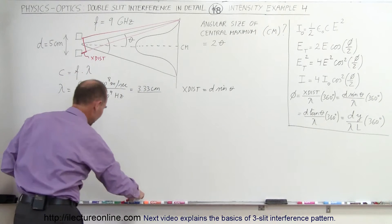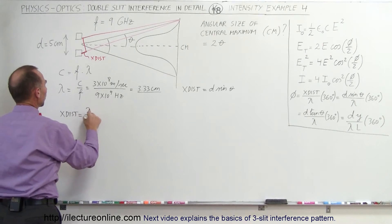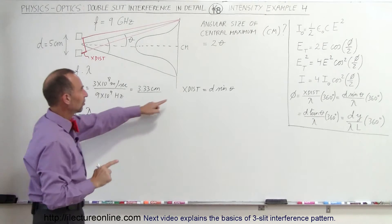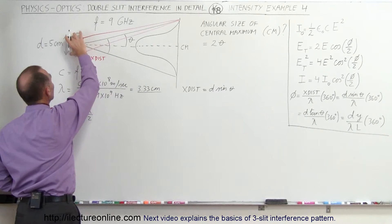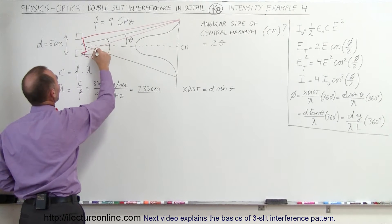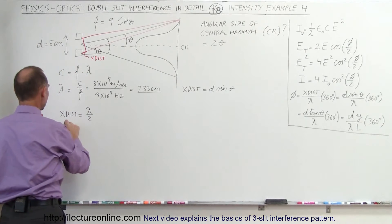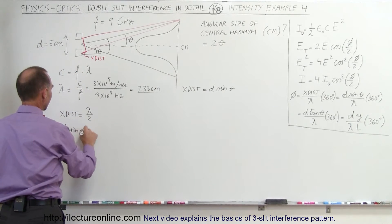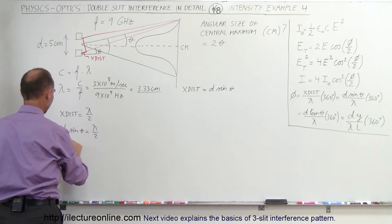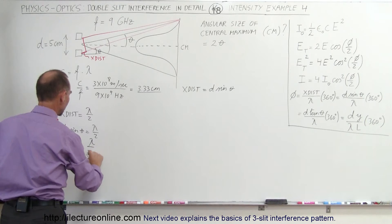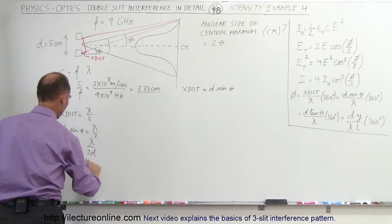So the extra distance traveled must be equal to lambda over 2. Since we know that the extra distance traveled is equal to D sine theta, where D is the distance between the two and theta is this angle, we can say that D sine theta equals lambda divided by 2.